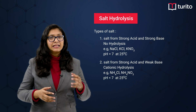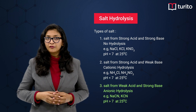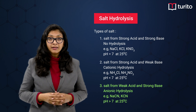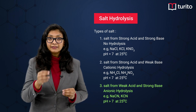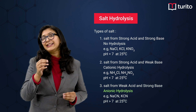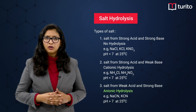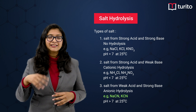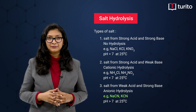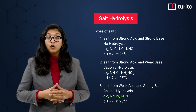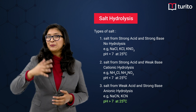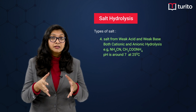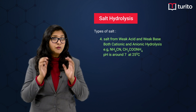The third type is salt formed from a weak acid and a strong base. These salts undergo anionic hydrolysis. Examples are NaCN and KCN. The pH at 25°C will be more than 7 for these salts.